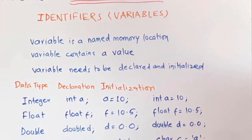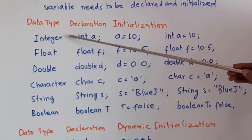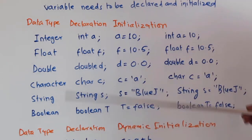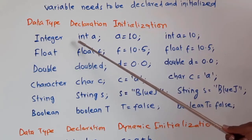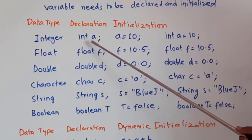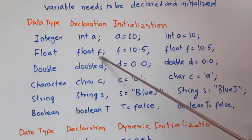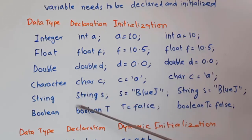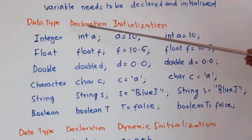You have to specify the data type for which you need the variable. Data types include: integer (int), float, double, char, String, and boolean. To store an integer: 'int a'. To create a float variable: 'float f'. For double: 'double d'. For character: 'char c'. For string: 'String s'. For boolean: 'boolean t'. The variable name (a, f, d, c, s, t) can be any name you choose.